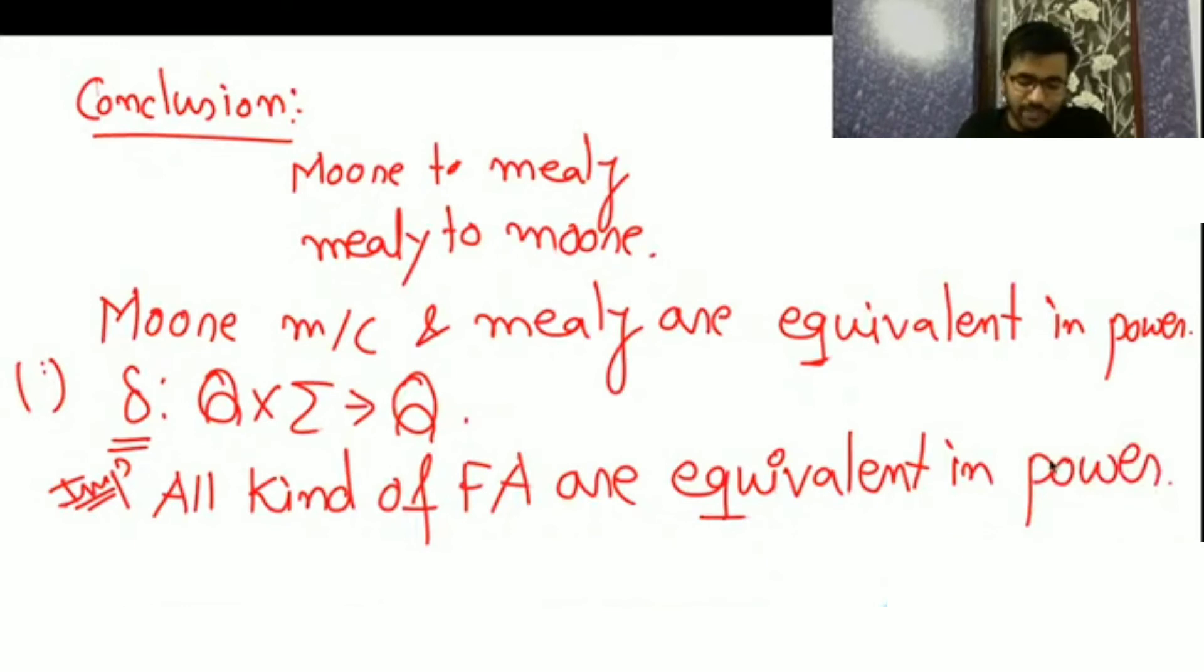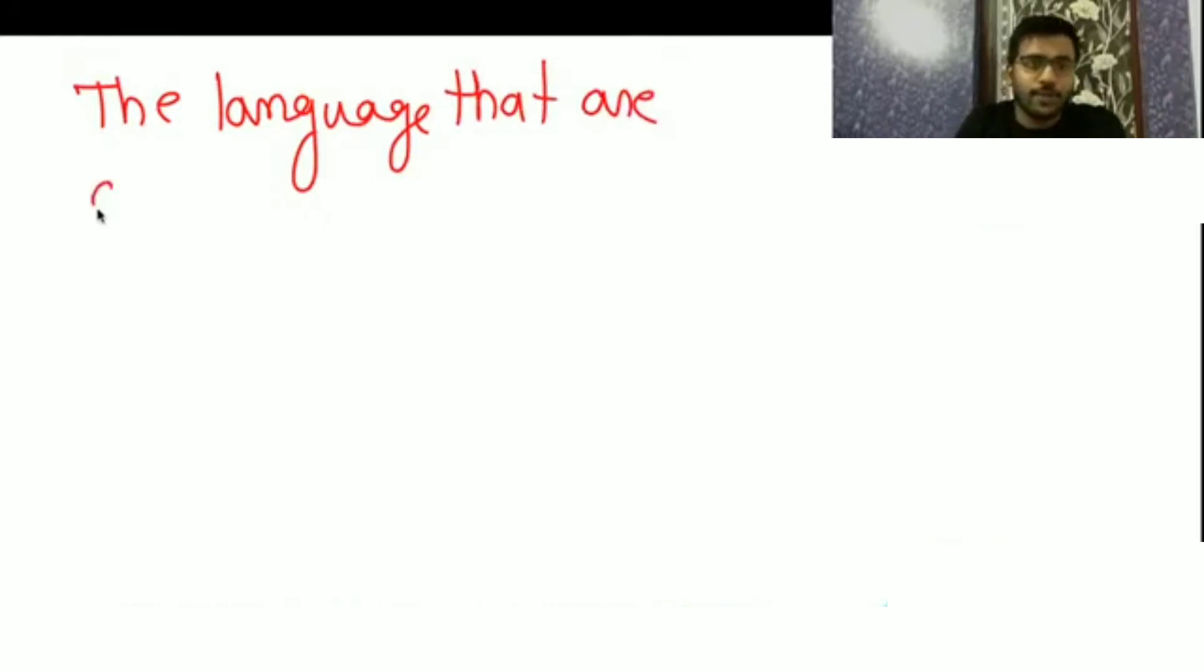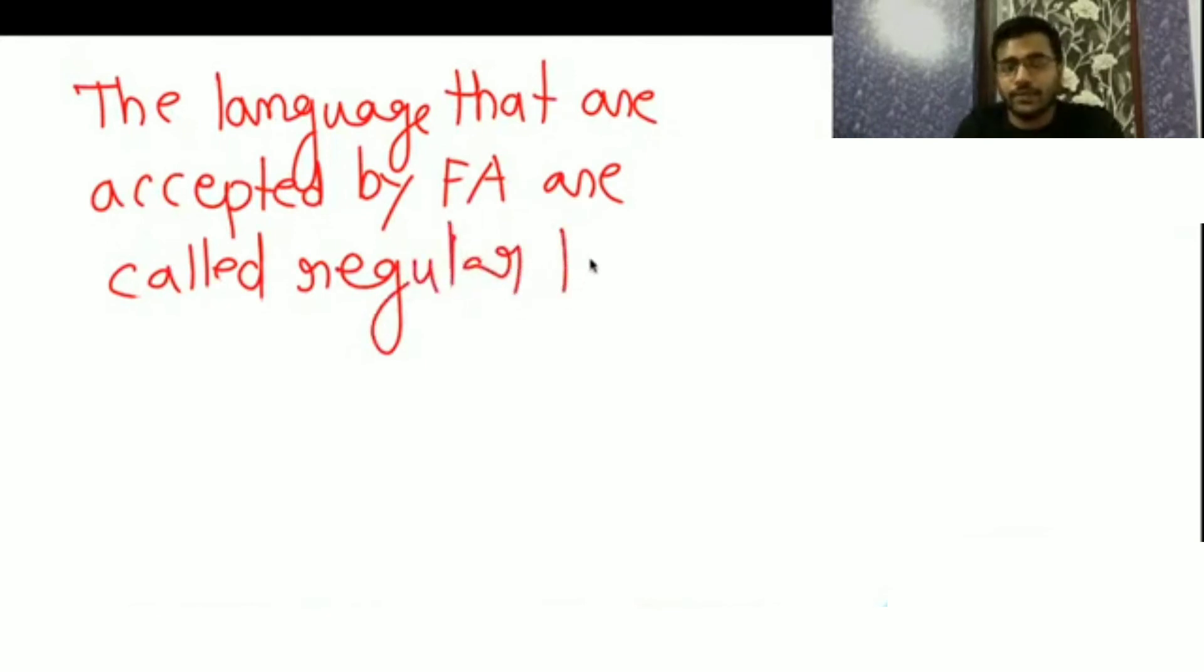All kind of FA are equivalent in power. So Mealy machine, Moore machine, DFA, NFA, epsilon NFA - all kind of FA. Next, the language that are accepted by FA are called regular language. For any language, if you are able to give a finite automata, it means that language is a regular language. So what we can say - all the language accepted by FA are regular languages.